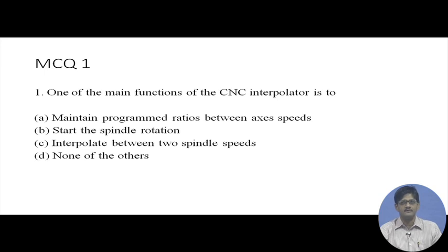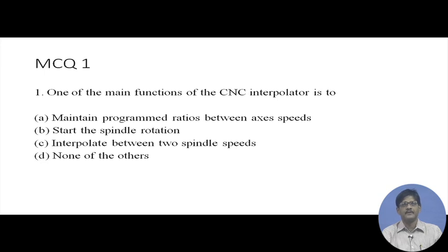One of the main functions of the CNC interpolator is to: (a) maintain programmed ratios between axis speeds, (b) start the spindle rotation, (c) interpolate between two spindle speeds, or (d) none of the others. The correct answer is (a): maintain programmed ratios between axis speeds. The two main functions of the CNC interpolator are: one, to maintain programmed ratios between axis speeds, and two, to maintain the programmed absolute feed value along the cutter path.